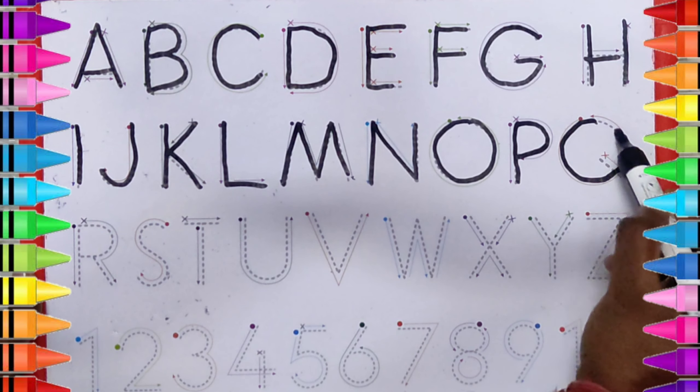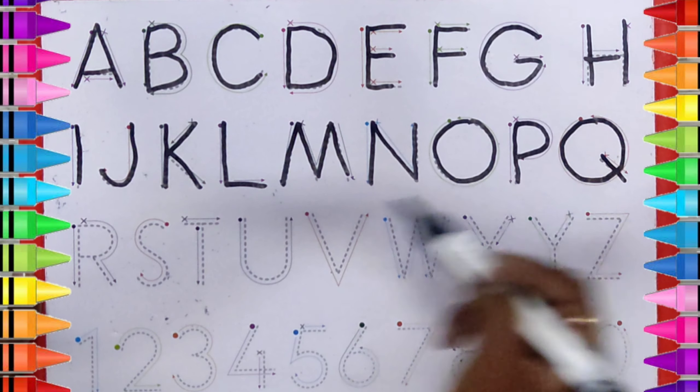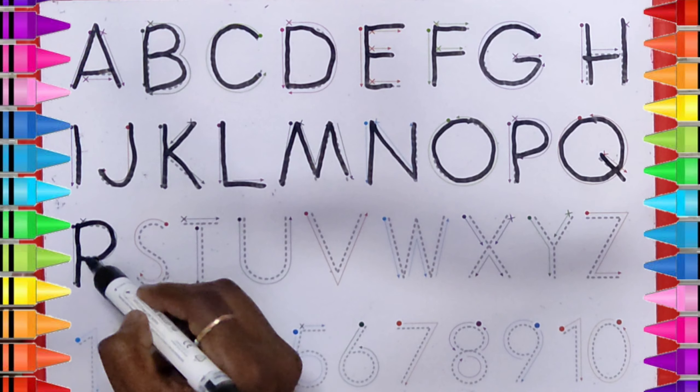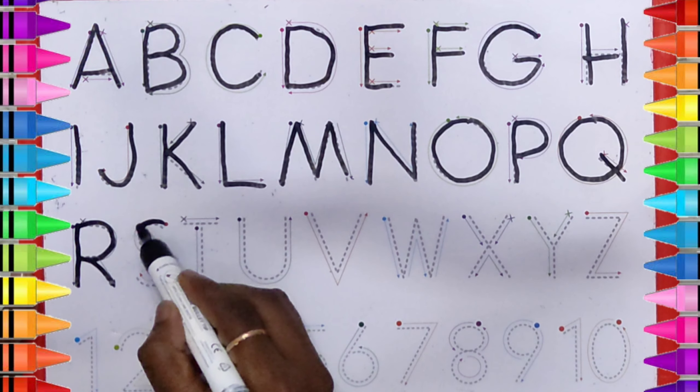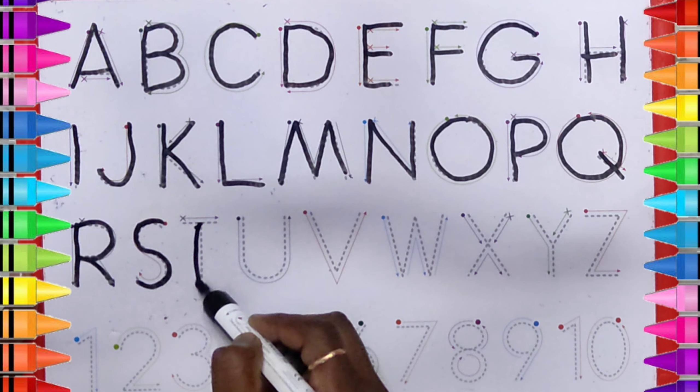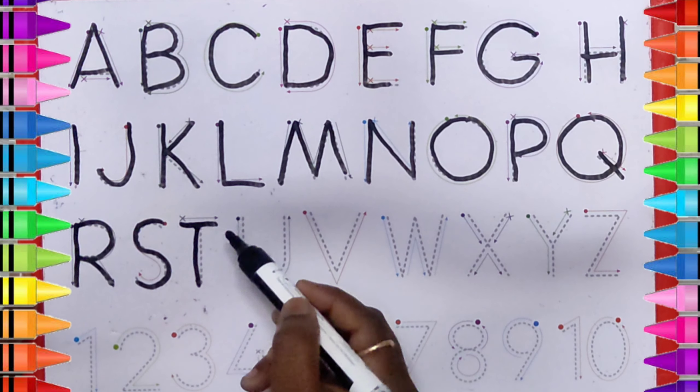Q. Q for Queen. R. R for Rose. S. S for Sun. T. T for Tree.